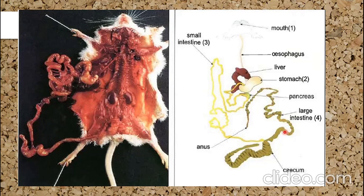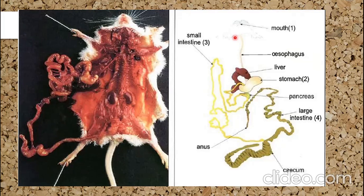If the food is not mixed with juices, it will be dry and hard to digest. That's why we have digestive glands — they give juices that mix with the food, making it easier to digest. These glands are found in the mouth, such as the salivary glands.